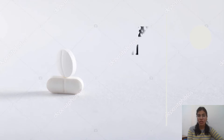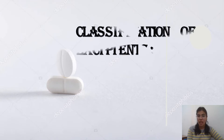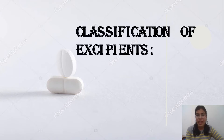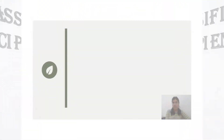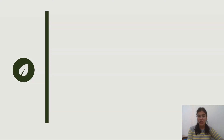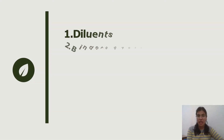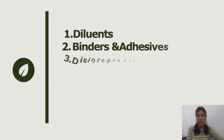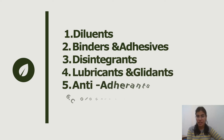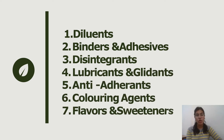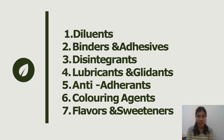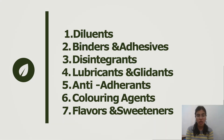Now talking about the classification of excipients — it is classified into seven classes: diluents, binders and adhesives, disintegrants, lubricants and glidants, anti-adherents, coloring agents, and flavors and sweeteners.